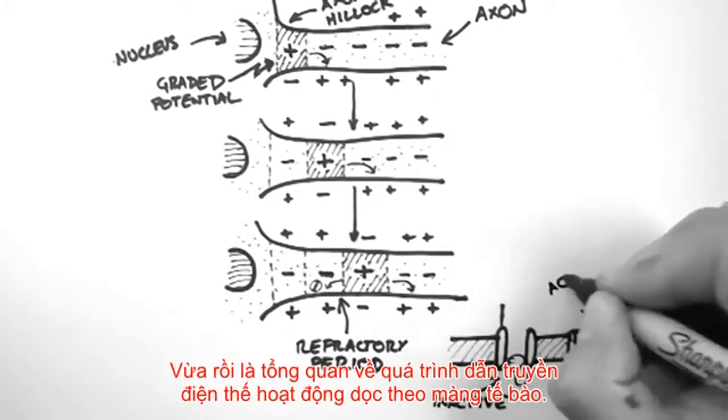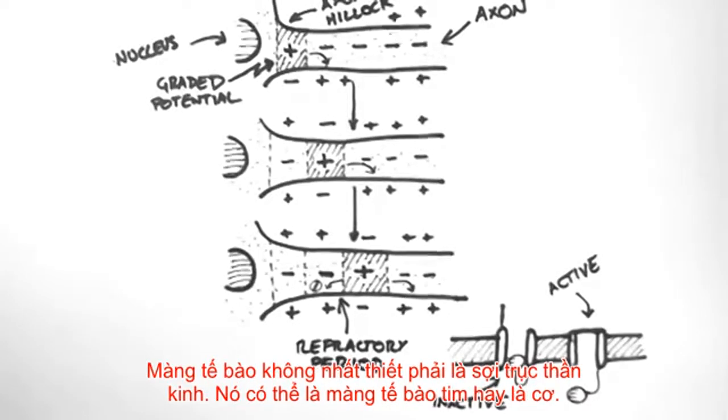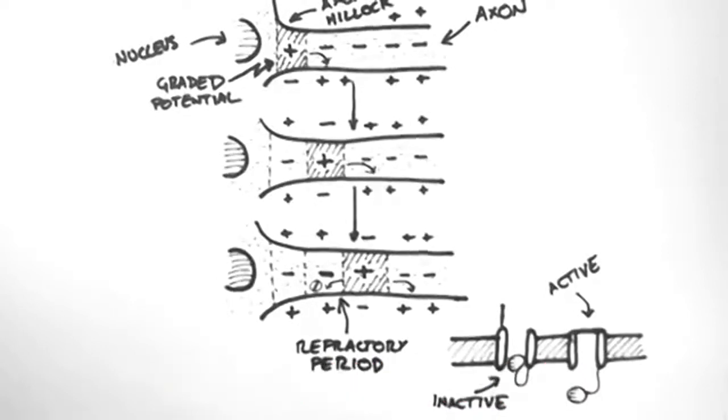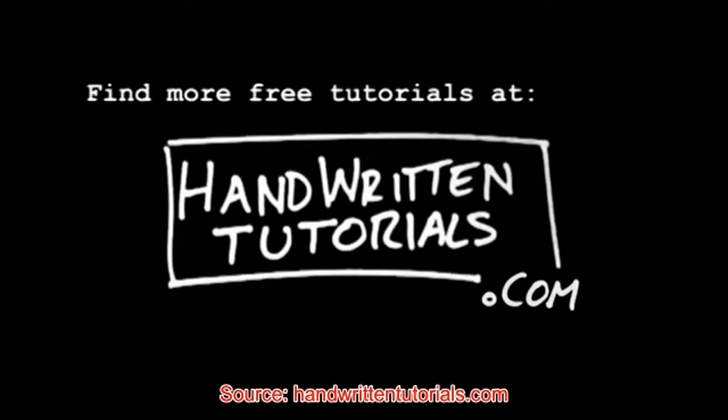So this is an overview of how action potentials propagate down a membrane. This membrane doesn't have to be an axon. It could be the membrane of a cardiac or a muscle cell. Now you should have a pretty good understanding of how action potentials work and the molecular biology behind them. So for more free tutorials and the PDF of this tutorial, visit www.HandWrittenTutorials.com.